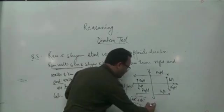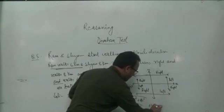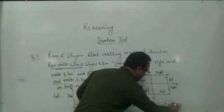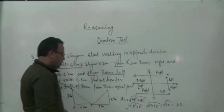This will be 64 plus 36, equals 100. Square root of 100 is 10 km.